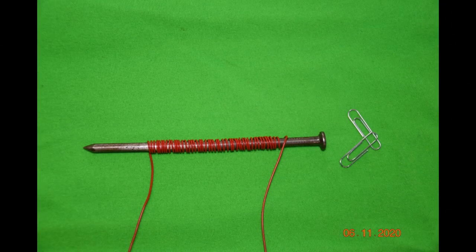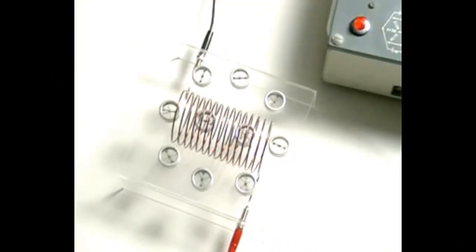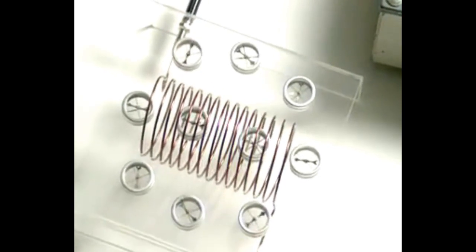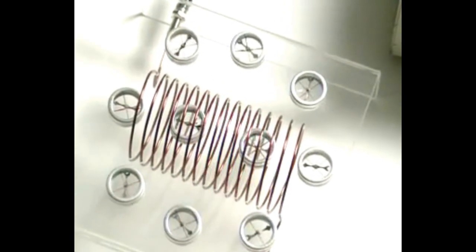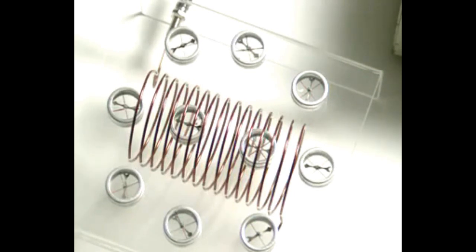You've probably even built an electromagnet by wrapping a wire around a nail and passing a current through. A coil of wire with an electric current flowing through it produces a field similar to that of a bar magnet. As the electricity is switched on and off, so is the magnetic field.